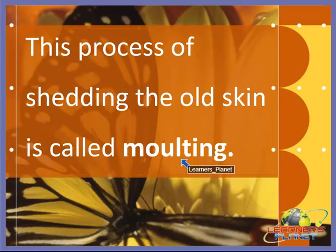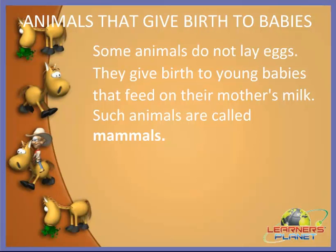Also remember that there are about 15,000 different types of butterflies — isn't it amazing? So, we studied about two animals that lay eggs: frog and butterfly. Both show the process of metamorphosis. Now we are going to study about the animals that give birth to babies, or we can say the animals that give birth to young ones.